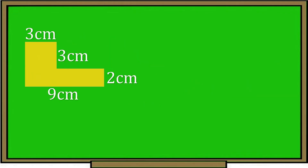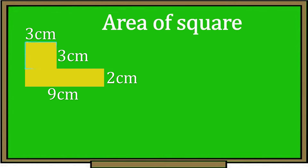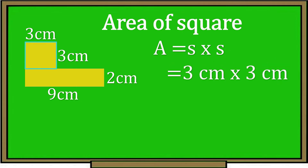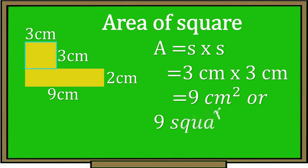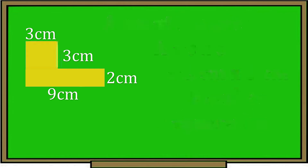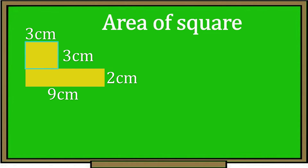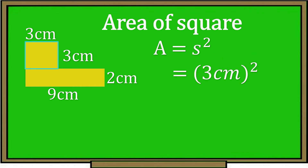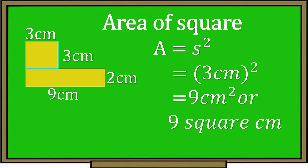Let's get the area of the square first. The formula for finding the area of a square is: area equals side times side. The measurement of the side of the square is 3 cm times 3 cm, so the area of the square is 9 square cm. We can also use the other formula: area equals S squared. So 3 cm squared is equal to 9 square cm.